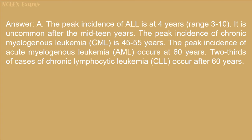Answer: A. The peak incidence of ALL is at 4 years (range 3 to 10); it is uncommon after the mid-teens. The peak incidence of chronic myelogenous leukemia (CML) is 45 to 55 years. The peak incidence of acute myelogenous leukemia (AML) occurs at 60 years.